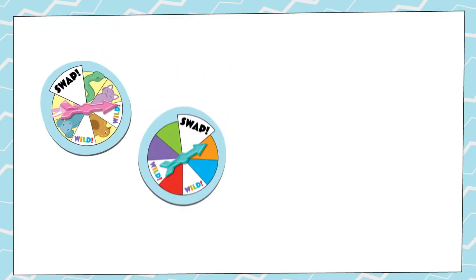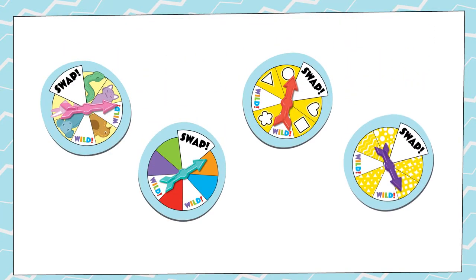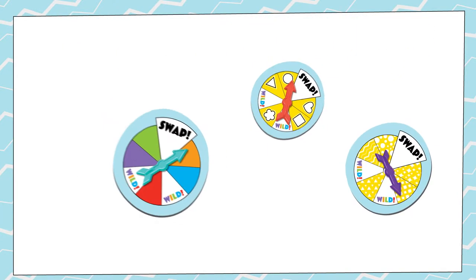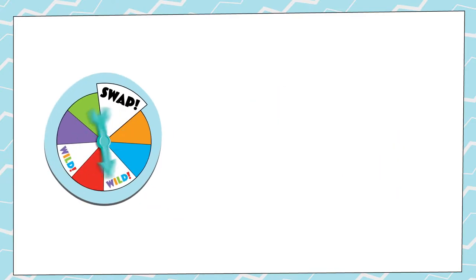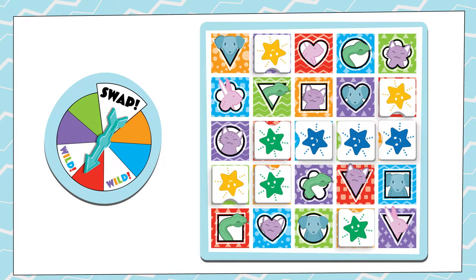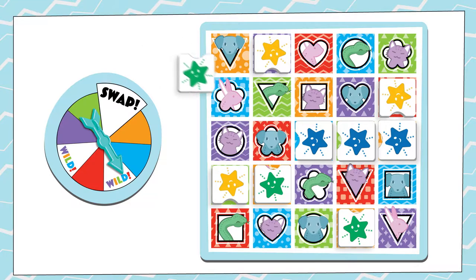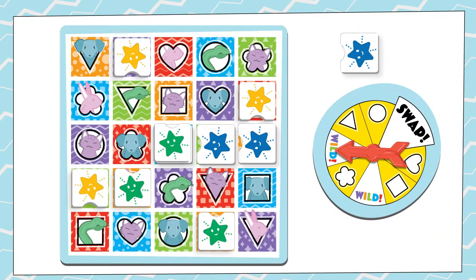There are four spinners in the game: character, color, shape, and pattern. Each turn, look for spaces that match your spinner. If you spin wild, play one of your tiles on any space on the board.